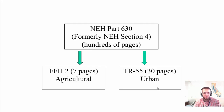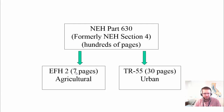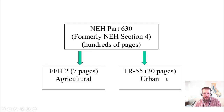NEH Part 630 is an NRCS publication, hundreds and hundreds of pages — you do not want to read it. But there are two derived documents worth reading: EFH2 for Agricultural Lands, which is only seven pages — download it from the NRCS website or from the attachment to this lecture. TR-55 is also a good resource; it's the pen-and-paper version of the TR-20 method. The TR-55 manual goes through the steps, how each equation is derived, and how to use it. It's also attached to this lecture — the only place I found it online is the HydroCAD website.